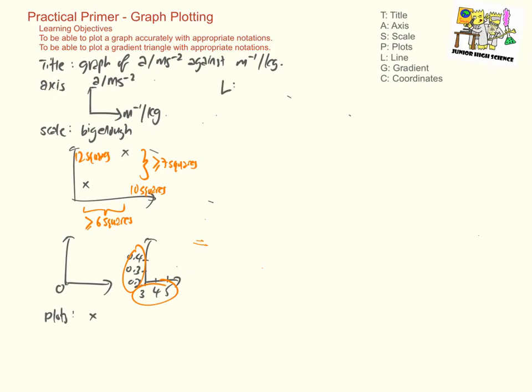Next comes L. L stands for line. More specifically, best fit line. A line in physics experiment shouldn't be a connect-the-dots kind of line. It should be a best fit line that minimizes deviations away from the plots. So what do I mean by this?